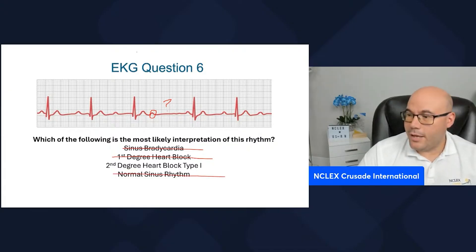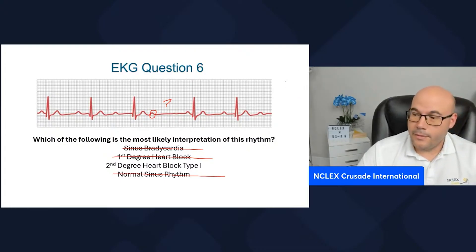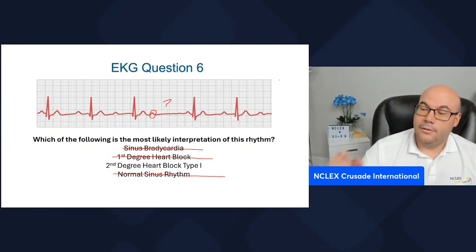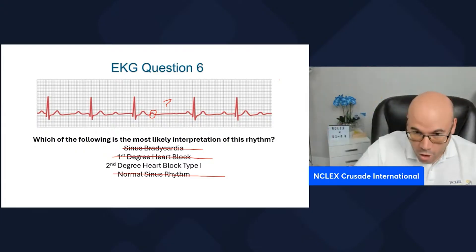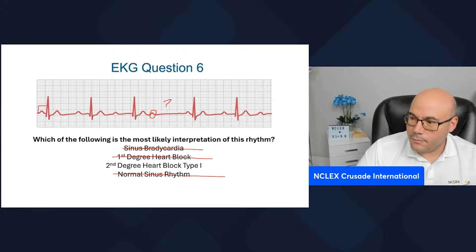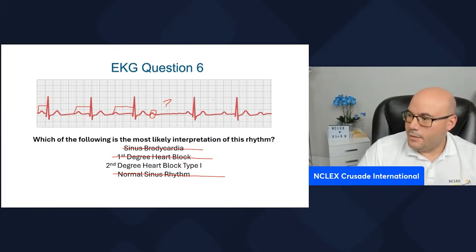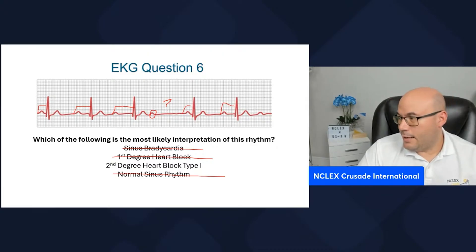So I am left with second degree heart block type one, which is: longer, longer, longer, longer, drop. If we measure the PR interval here, you're going to see that it's long, then longer, then longer, and then the missing QRS. Then it continues the same pattern: long, longer, and then it drops again.